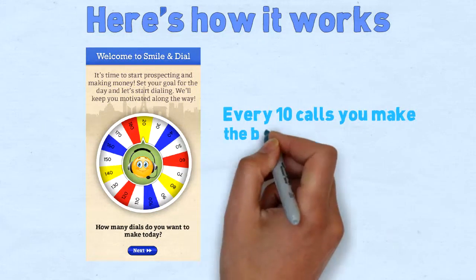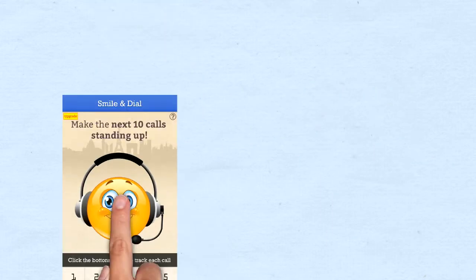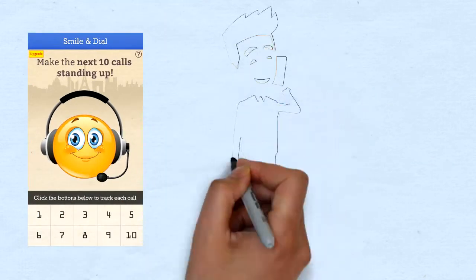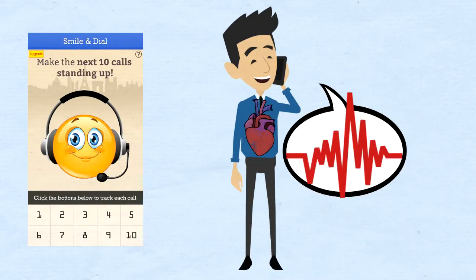Every 10 calls you make, the built-in personal coach will give you the action to take. For example, make 10 calls standing up. Studies show that standing up increases blood flow and creates more enthusiasm in your voice.